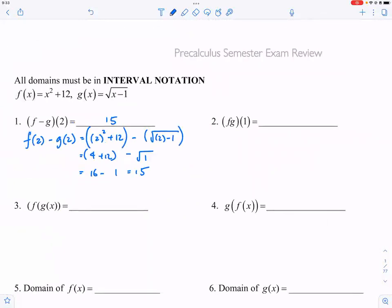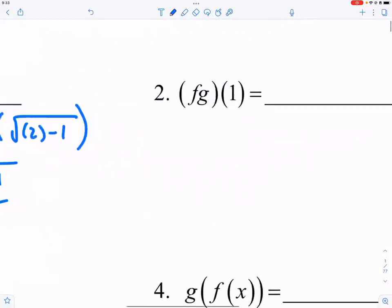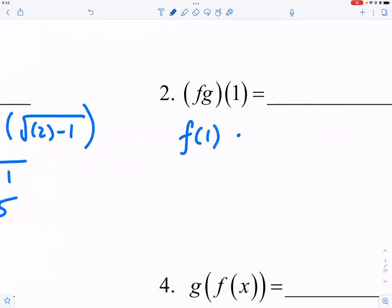Now if you understand the notation for number one, you probably have a good idea for what number two means. Number two simply means F of one times G of one.